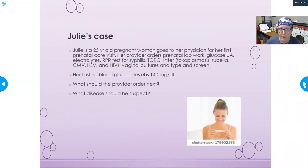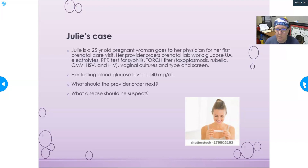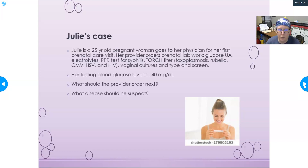Let's look at a case: Julie is a 25-year-old pregnant woman presenting for a first prenatal care visit. Her provider orders prenatal lab work including a glucose dipstick, urinalysis, electrolytes, an RPR test for syphilis, the TORCH titer — checking for toxoplasmosis, rubella, CMV, and HSV — HIV, vaginal cultures, and a type and screen to determine blood type. Her fasting blood glucose level comes back at 140.